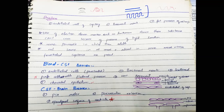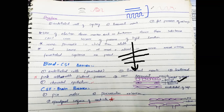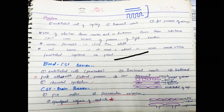The blood-CSF barrier has five layers: capillary endothelium, basement membrane, scattered cells, epithelium of the Choroid Plexus, and the Choroid Plexus basement membrane. The CSF-brain barrier, where CSF is in the subarachnoid space, involves three layers: the pia mater, the perivascular extensions, and the ependymal surface. So there are distinct multi-layer barriers separating blood, CSF, and brain tissue.